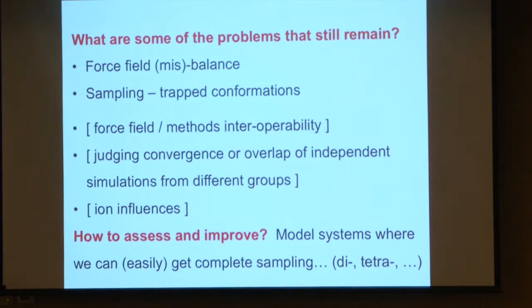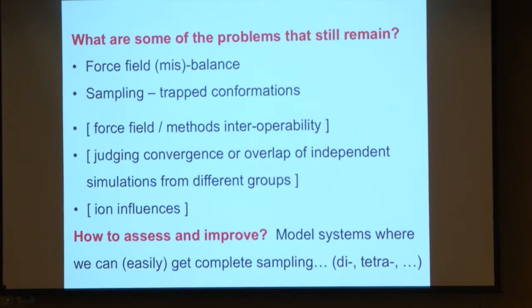So the problems that still remain are: force field balance or misbalance, sampling of trapped conformations where it may take a very long time to find a conformation you've never seen before, and force field methods interoperability — though that's not so much a problem anymore. We have good agreement among the different codes and methods, as long as you don't make an error in the force field conversion.